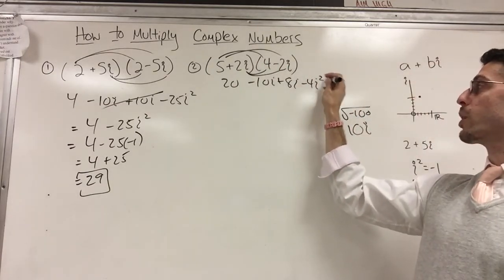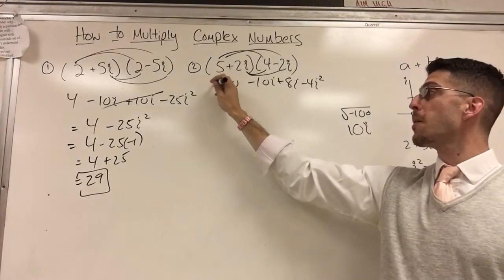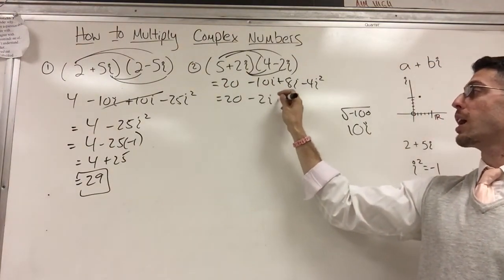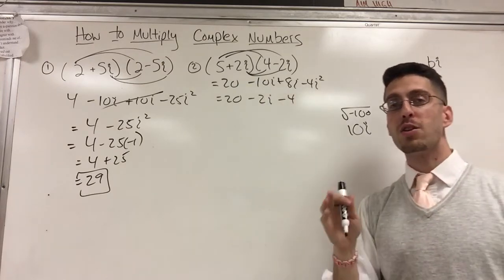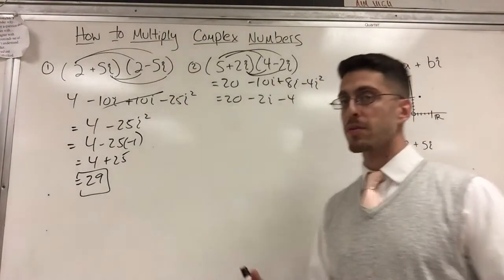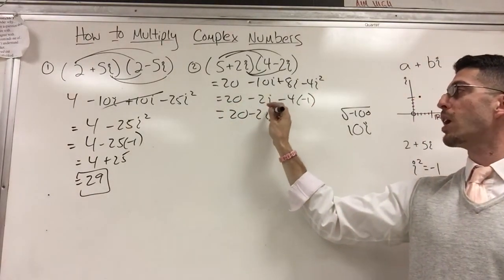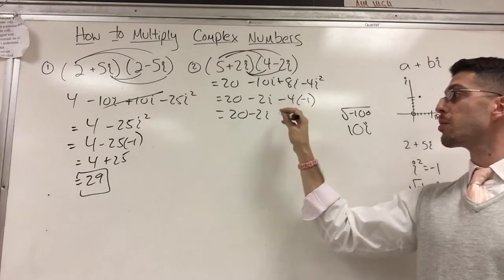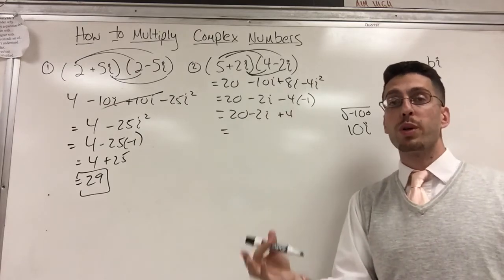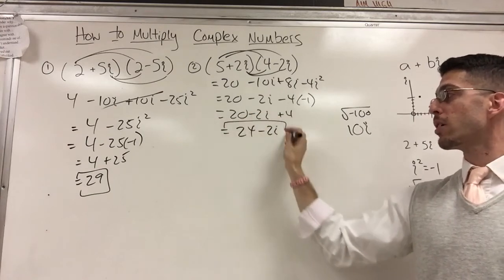Five times negative 2i. Positive 2i times four is positive 8i. And then 2i times negative 2i is negative 4 i squared. Here nothing cancels out, so I actually have to do some math. This is 20, negative 10 plus 8 is negative 2i, and then minus 4 i squared. I know that i squared is negative 1. That's very important. That happens a lot. So this is really minus 4 times negative 1. That's 20 minus 2i plus 4. Negative 4 times negative 1 is positive 4.